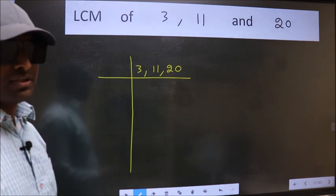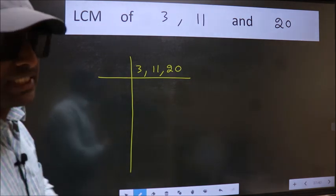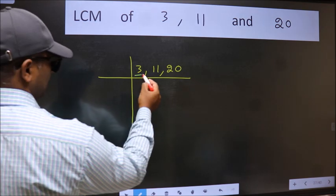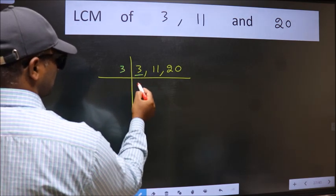Now we should focus on the first number which is 3 here. 3 is a prime number so 3 wants 3.